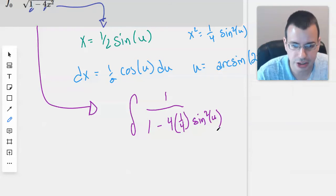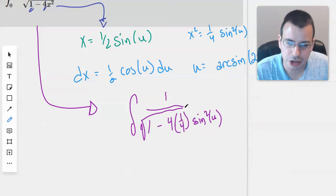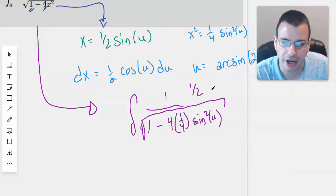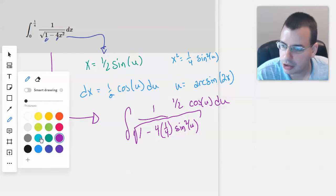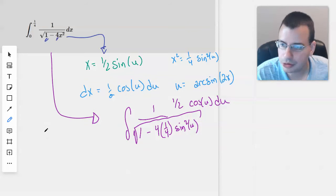So we come over here. So we have four times one fourth, just like we predicted, as the prophecy foretold, sine squared of u. Nope, that u is inadequate. Put in a square root sign. There we go. And then dx will have a one half cosine of u du.